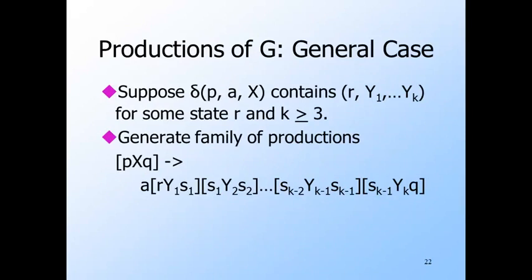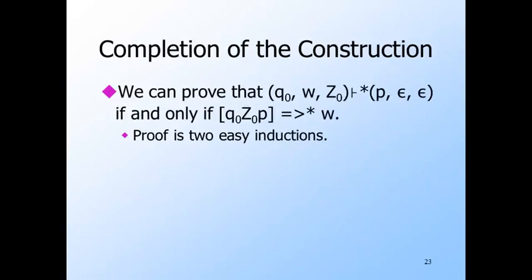In the general case, where on input A and state p, X is replaced by a string of three or more stack symbols, Y1 through Yk, and the state becomes r, we need a family of productions in which there are k minus one unknown states, s1 through s(k-1). The productions all have this form: [p, X, q] can be replaced by A, followed by variables [r, Y1, s1], [s1, Y2, s2], and so on, with the last of the variables being [s(k-1), Yk, q], and finally the state q from the head that we want to wind up in.